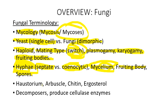A haustorium is a special type of hyphae used by fungi that live in symbiotic relationships with plants. Just as certain bacteria are responsible for nitrogen fixation for plants, certain fungi live fused to the roots of plants and are able to fix nitrogen and make amino acids from nitrogen gas in the atmosphere, whereas the plants cannot. A haustorium is a special type of hyphae that lives in a symbiotic relationship with plant roots and fixes nitrogen for the plants.